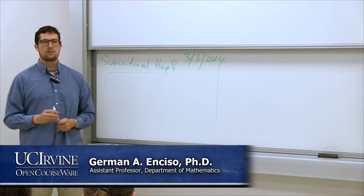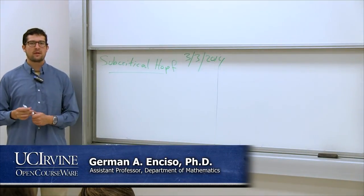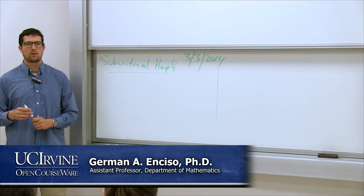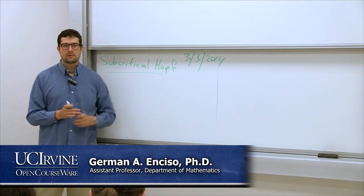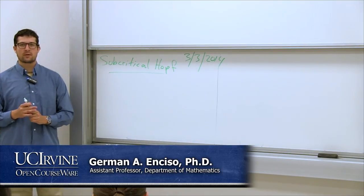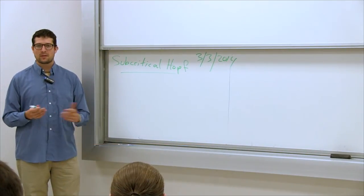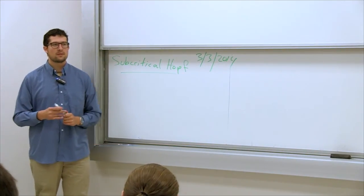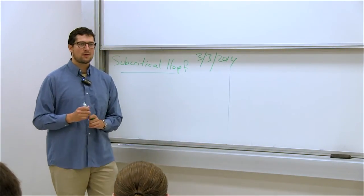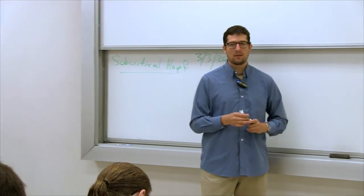I want to continue talking about periodic oscillations and periodic orbits. We'll talk about something called subcritical Hopf bifurcations. Once again, funny name, but I'll explain what it means. Who can tell me again what we did last time? What was a Hopf bifurcation again?